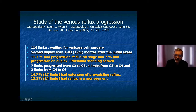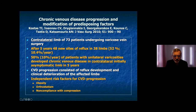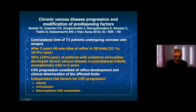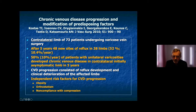That means varicose veins are developing if you do not treat them. Costas showed in 73 patients undergoing varicose vein surgery that the contralateral limb — which had no varicose veins before — developed 48 new sites of reflux after five years, meaning 52% or 10.4% per year. Every second patient developed varicose veins in the other limb. Independent risk factors were obesity, prolonged standing, and interestingly, non-compliance with compression, though this was a retrospective study.